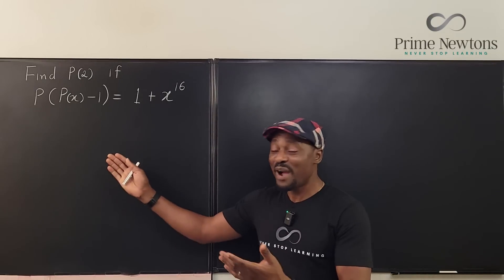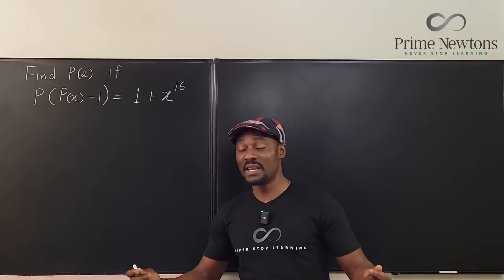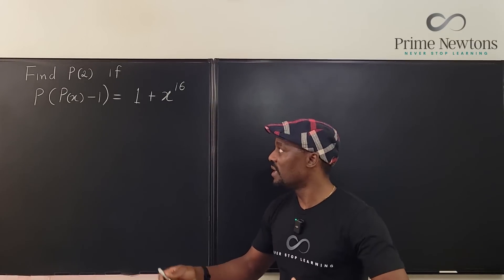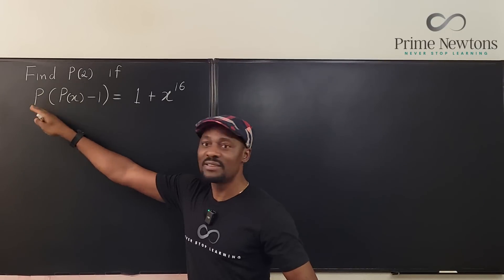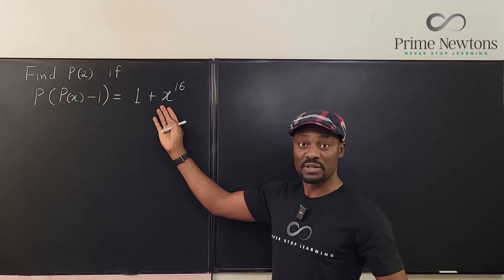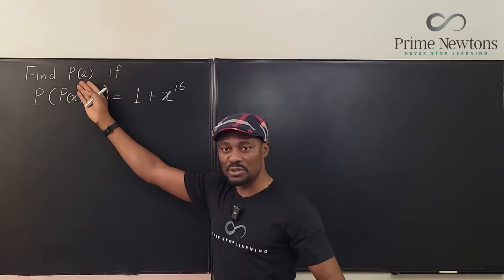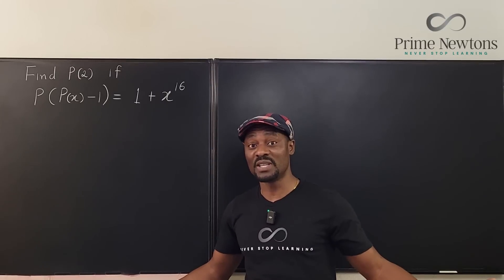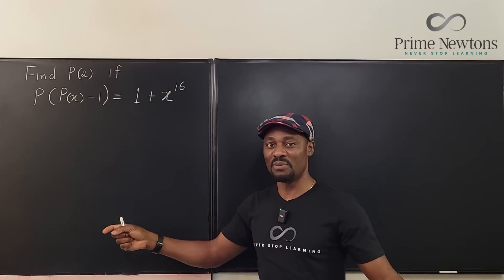Here we have a polynomial that is not explicitly given. We're given a composition of the polynomial — that is, p of x minus 1 is composed with itself and our result is 1 plus x to the 16th. So they want us to find p of 2. The problem is that we don't know what the polynomial is; we just know a composition of it.